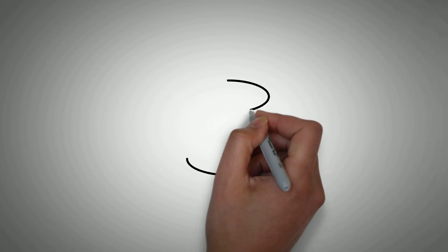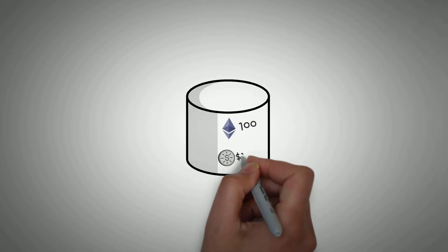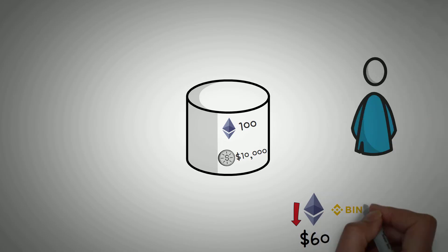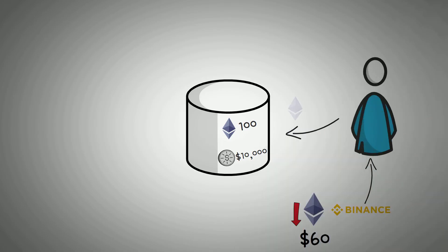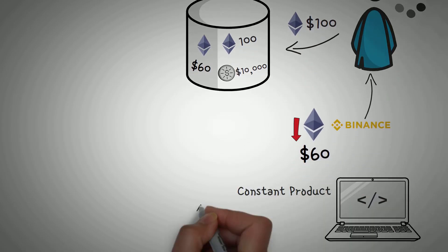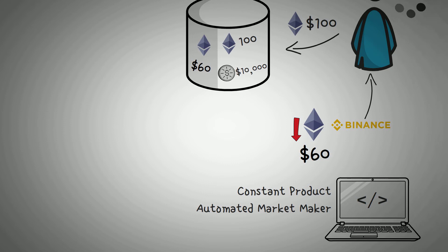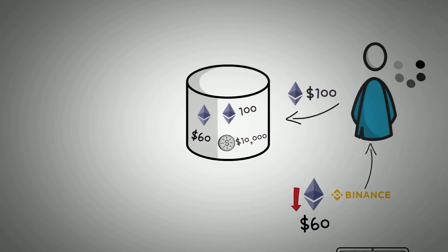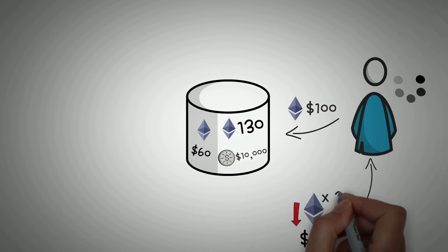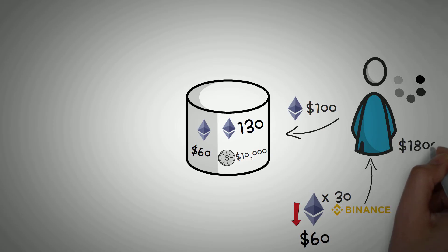Let's consider another example. This time we're going to start off with again, a hundred Ethereum and $10,000 in a liquidity pool. However, Ethereum price drops from $100 to $60 on Binance. So another trader comes along. He buys Ethereum on Binance and sells it to our liquidity pool, starting at $100, and then our liquidity pool keeps buying it at a lower and lower price until the pool hits $60. Using the math of a constant product automated market maker, we find out that this means the trader gave the pool 30 Ethereum. The trader bought 30 Ethereum at $60 each on Binance, which cost them $1,800.